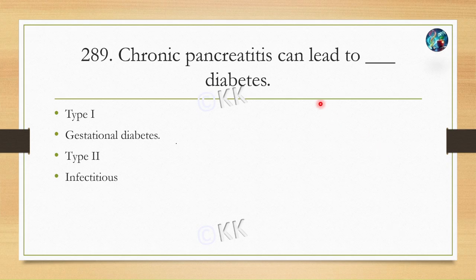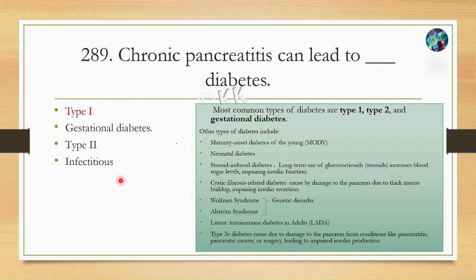Next question: chronic pancreatitis can lead to which type of diabetes? Option A Type 1, option B Gestational diabetes, option C Type 2, option D Infectious. The correct option is Type 1 diabetes. Chronic pancreatitis leads to pancreatic damage, causing the beta cells of the pancreas to be unable to produce insulin.